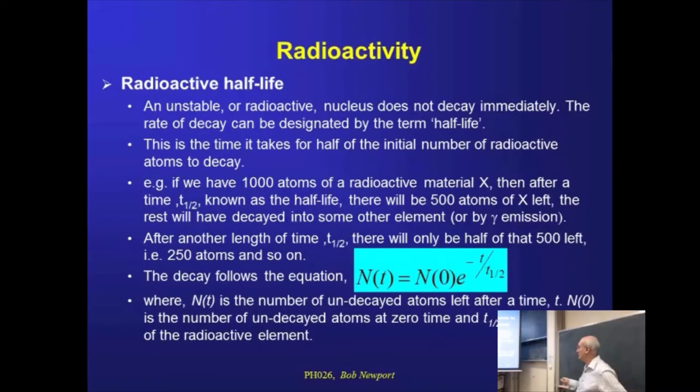This is the number of undecayed nuclei left after some time t. And the relationship between one and the other is given by this exponential term here. So this is essentially saying it's e to the power of minus how many half-lives. The actual amount of time divided by the half-life.